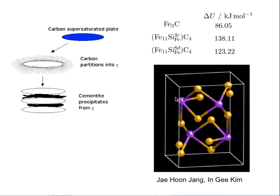What we want to do is stop the reaction at this point — in other words, any carbon that is partitioned into the austenite we want it to stay there and stabilize the austenite. Austenite is a nice thing to have in the microstructure; it does not have a ductile-brittle transition temperature unlike ferrite. So, if we add silicon that ought to suppress the cementite, and here is an example to show you why silicon suppresses cementite.